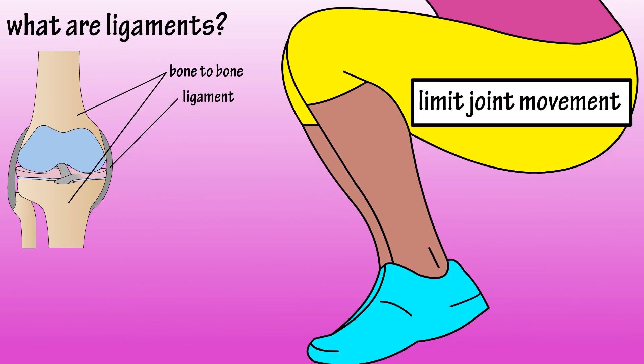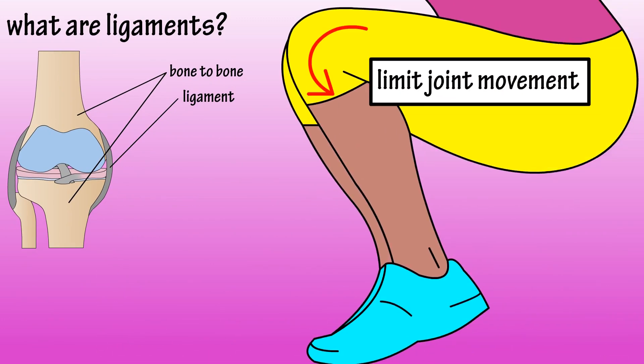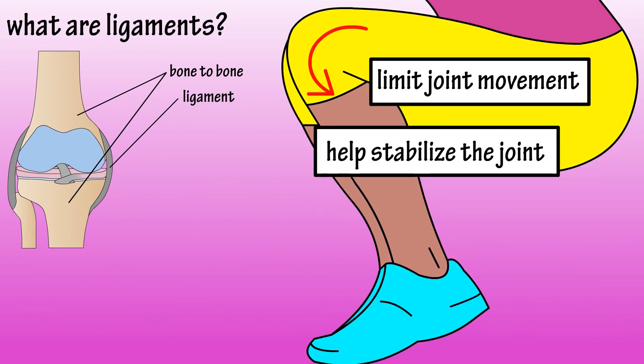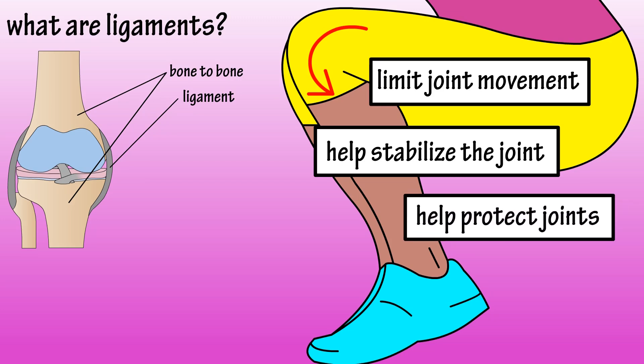Ligaments limit how much a joint can move in a given direction, so they stabilize the joint. Ligaments also protect joints and bones, as they can absorb some shock as the body moves.